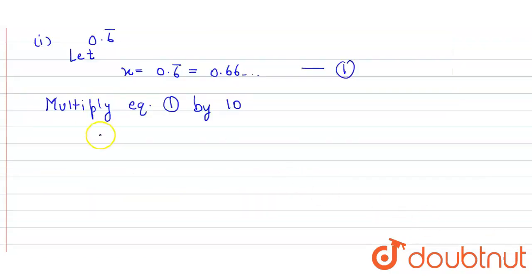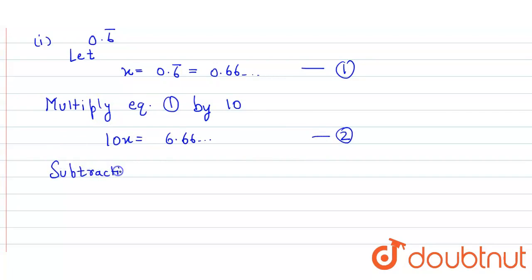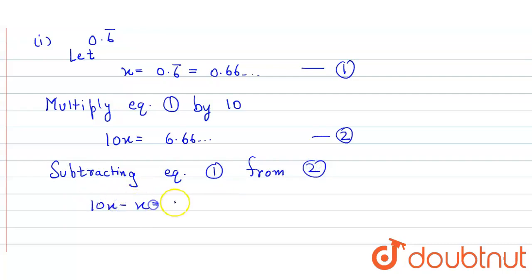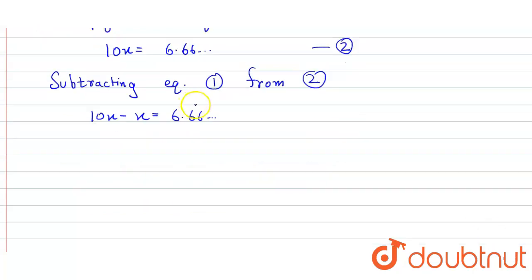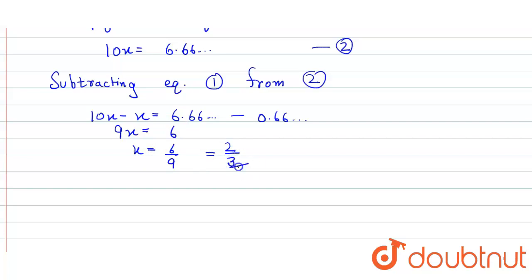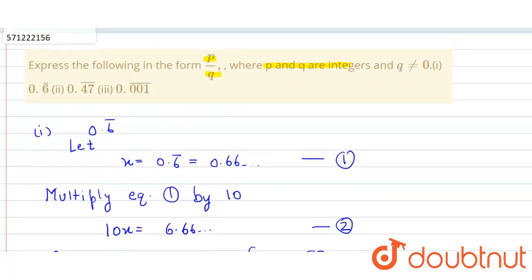So we get 10x is equal to 6.666... to infinity. We consider this to be equation number two. Now, subtracting equation one from equation two, on the left hand side we get 10x minus x, which gives 9x equal to 6. So x is equal to 6 upon 9, which equals 2 by 3, and that's our answer for the first part.